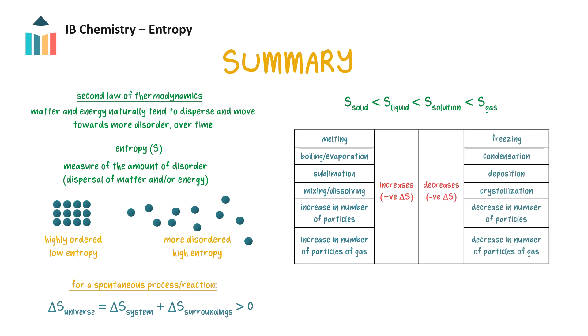The opposite processes have a negative entropy change. And finally, the standard entropy change of a reaction can be calculated by finding the difference in the standard entropies of the products and the reactants.